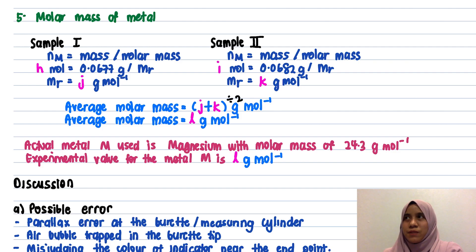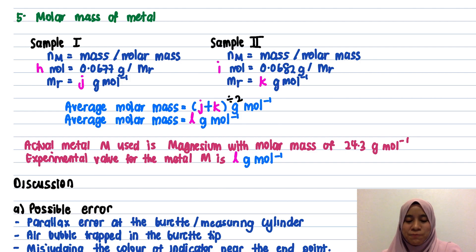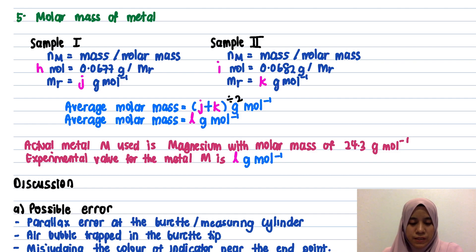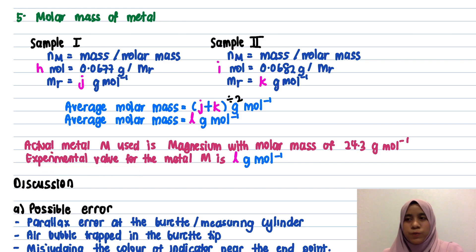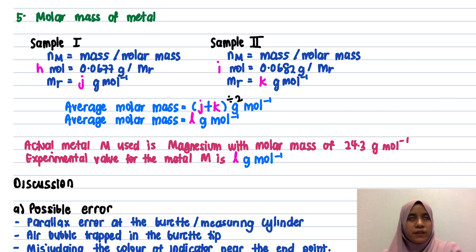Looking back, the procedure steps are simple — just one titration — but the calculation to find the molar mass is more involved. In the discussion, the metal used in this experiment is magnesium with an actual molar mass of 24.3 g/mol. Compare this with your experimental value. If your value differs, it's fine — we will discuss the discrepancy in the discussion section.